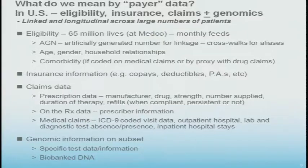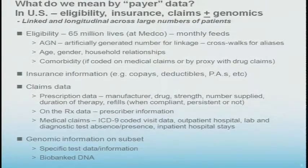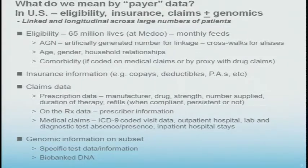We have comorbidities in some cases, and it's updated every month, so we know if someone becomes ineligible. We have all their insurance information, all of their claims data — every outpatient prescription drug they've received for many years. We would know things like compliance, switching, non-persistence, dosing, and duration. Also information about the prescribers — specialty, years since training — which may have some interest if you're trying to figure out who is ordering genomic tests. Medical claims, inpatient or outpatient with ICD-9 codes. And the presence or absence of a test as long as it's coded, but not usually the value. We also have some genomic information.